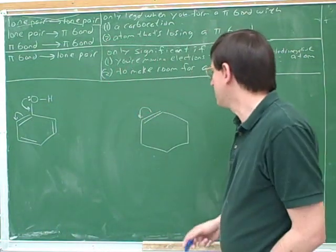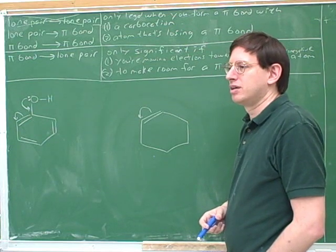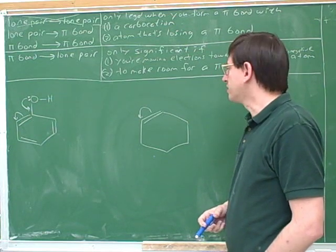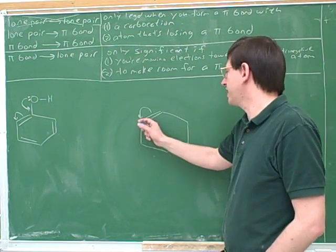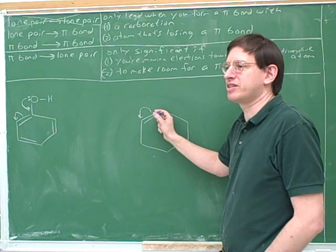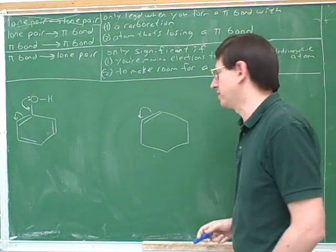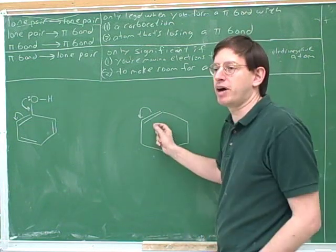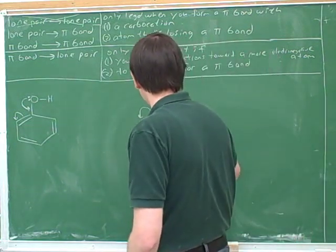For example, is this a significant arrow? It's legal, but it's not significant. Why should we put a negative charge here and a positive charge here when both atoms have the same electronegativity? So I wouldn't bother drawing this — this is insignificant.